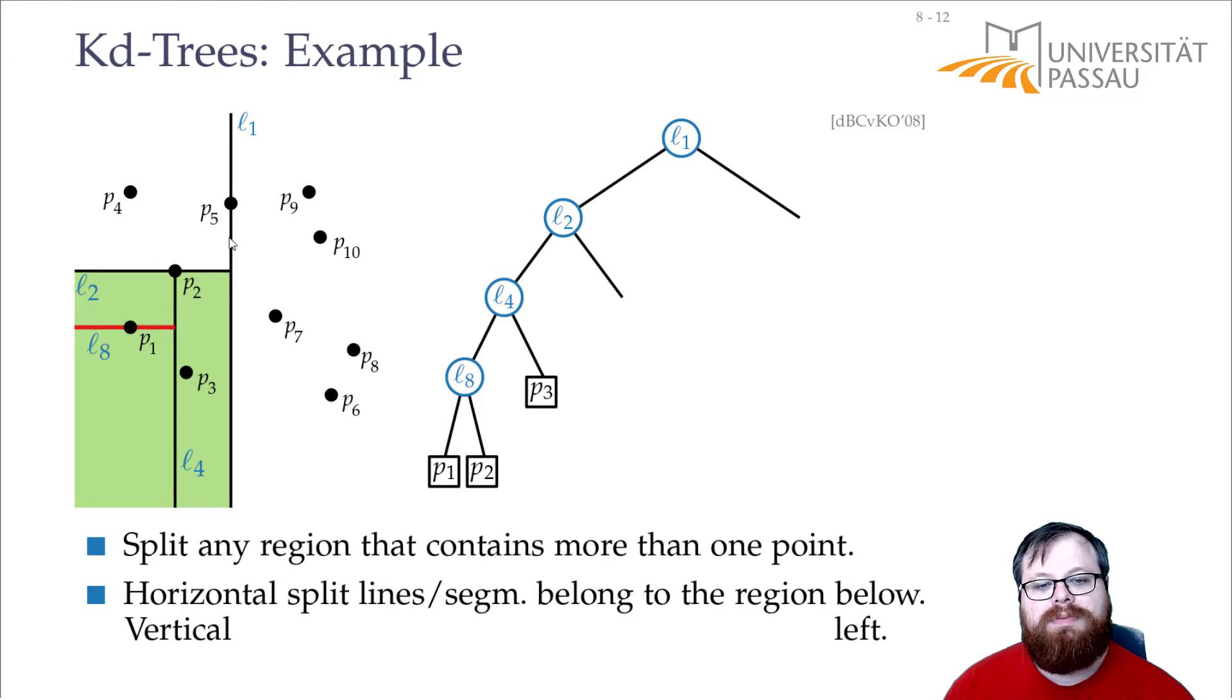Up here we have two points, P4 and P5, so we have to split again. That gives us one region with P4, one with P5. And then, same way on the right side for these five points, we have to do our split lines.